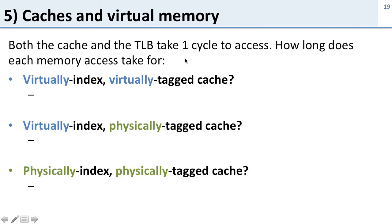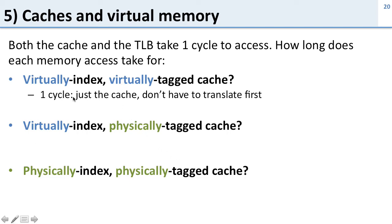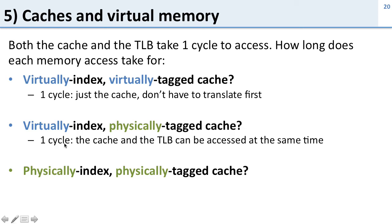Finally, let's look at performance. If both the cache and the TLB each take one cycle to access: VIVT takes just one cycle — we don't need the TLB at all on a hit — but the downside is we can't have multiple programs sharing the cache. VIPT is also one cycle — we access the cache and TLB in parallel, so the maximum of one and one is still one — but the cache size is limited because we use virtual bits for the index.